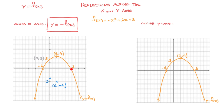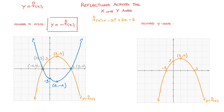Carrying on, I look at the two x-intercepts. We have one here with coordinates negative 1, 0, and the other one with coordinates 3, 0. Following this transformation, the y-coordinates of these points will turn into their opposites. But the opposite of 0 is just 0, so the x-intercepts will remain the same. Keeping in mind that this transformation turns every single y-coordinate into its opposite, the transformed curve is the reflection of y equals f of x across the x-axis, and will look something like this.